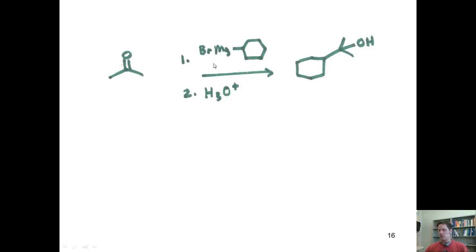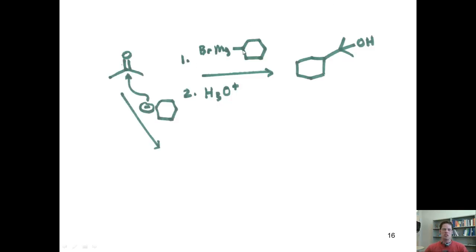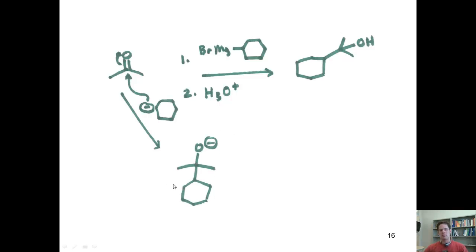Remember, cyclohexyl magnesium bromide, as well as all Grignard reagents, really just behave as if there were a minus charge on the carbon bound to the magnesium. That minus charge, when reacted with this ketone, comes into the carbonyl carbon, thrusting these electrons onto the oxygen, and gives me this intermediate. When this intermediate is quenched with acid, it then yields the indicated tertiary alcohol product.